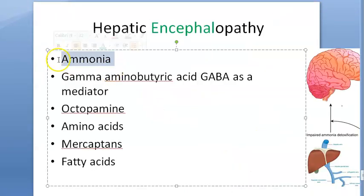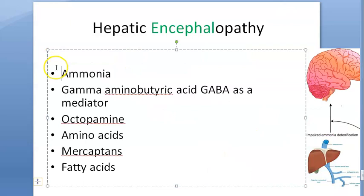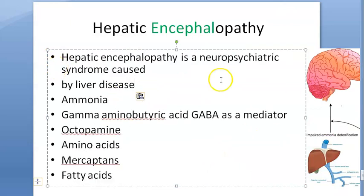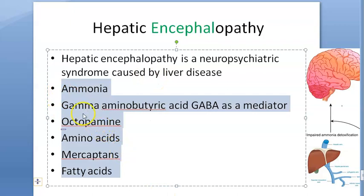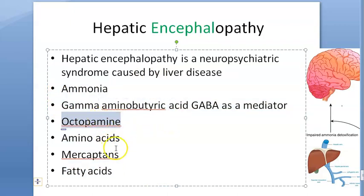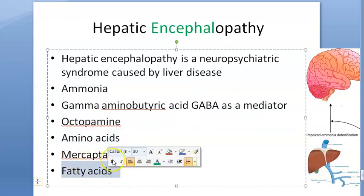So what is hepatic encephalopathy? It is a neuropsychiatric syndrome caused by liver disease. The toxins involved include ammonia, gamma-aminobutyric acid (GABA) as a mediator, octopamine, amino acids, mercaptans, and fatty acids acting as neurotransmitters.